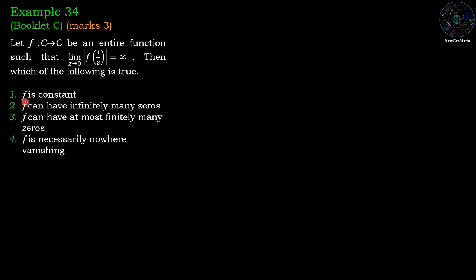First option: f is constant. Second option: f can have infinitely many zeros. Third option: f can have at most finitely many zeros. And the fourth option: f is necessarily nowhere vanishing.